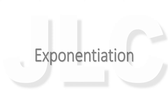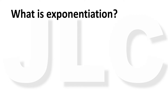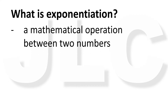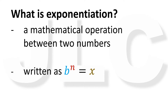In this video, we're going to talk about a basic mathematical operation called exponentiation. What is exponentiation? Exponentiation is a mathematical operation between two numbers. It is written as a number b with a superscript n, pronounced as b raised to n, b to the power of n, or b to the nth power.